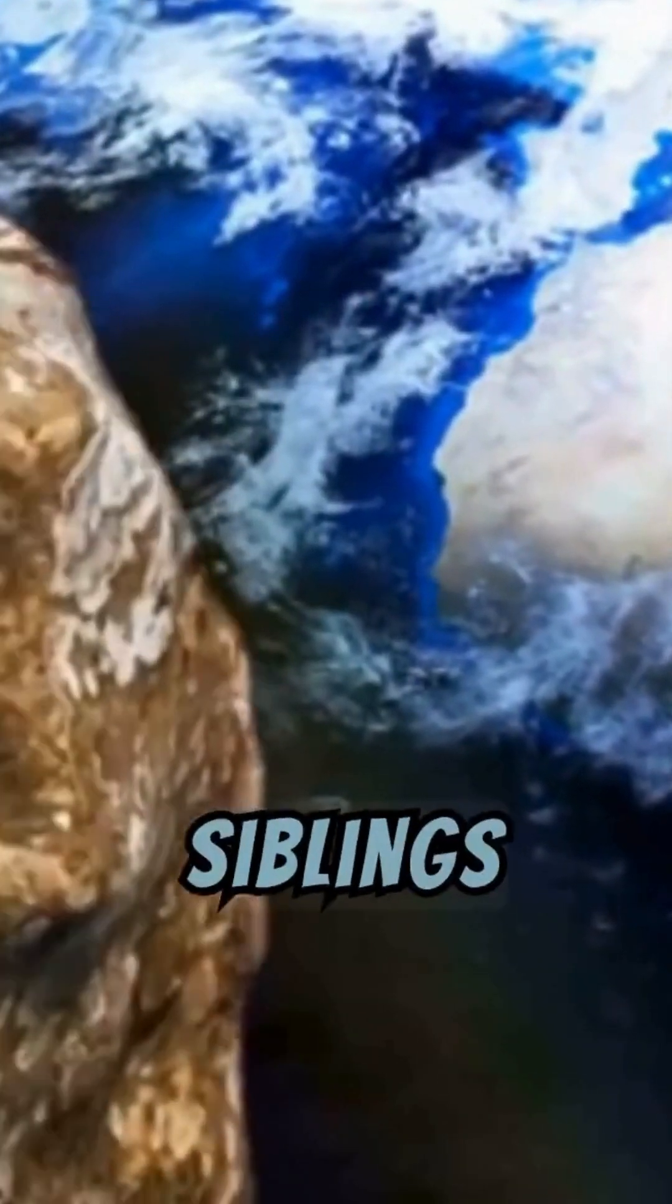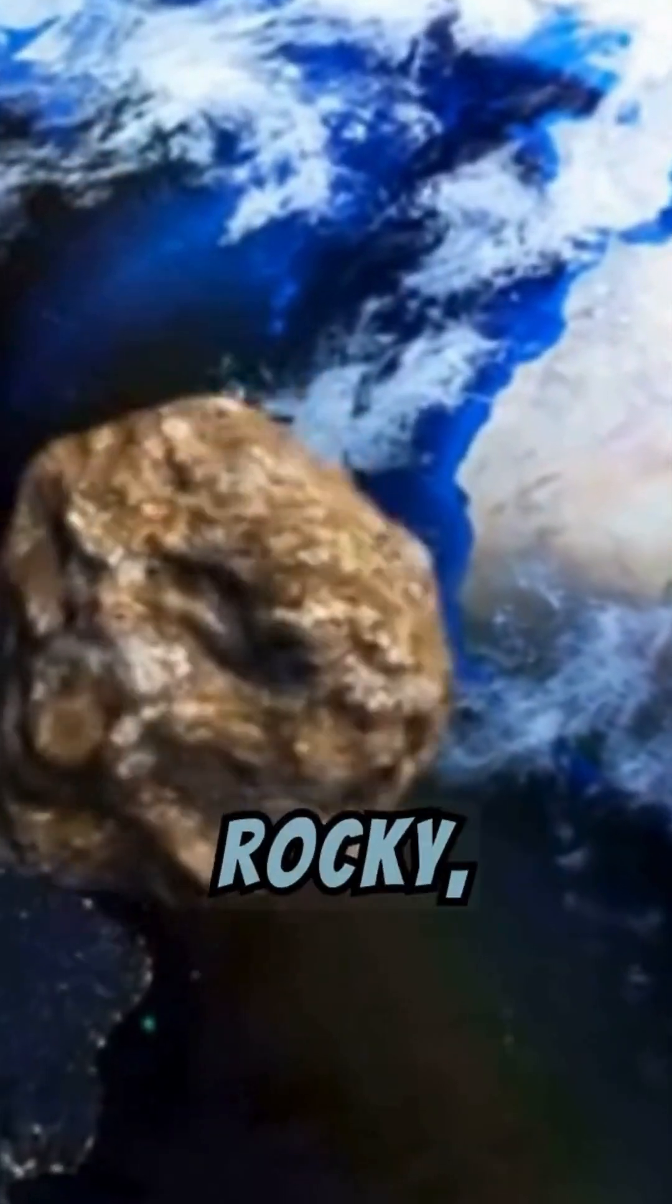Asteroids and comets, the quirky siblings of our solar system, one rocky, one icy.